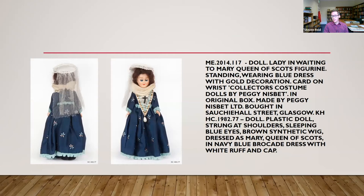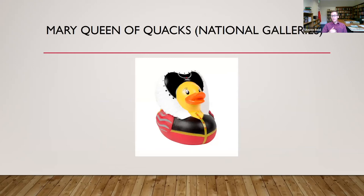The iconography passes into the 20th century into material culture, and here we get into another big finding — the commercial, capitalist aspects of Mary. This is an example of one of the Peggy Nesbitt series of dolls, now collector's items you can get on eBay, produced in the 1960s, 70s, and early 80s. It's a doll of Mary, but you know it's Mary because of that iconography and paraphernalia attached to her — the cross on her chest, the cap, and the hair.